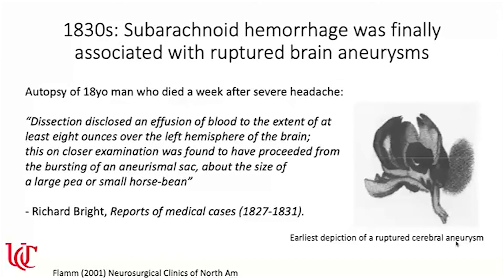It wasn't until the 1830s that subarachnoid hemorrhage was finally associated with ruptured brain aneurysms. Richard Bright, a British physician, performed an autopsy of an 18-year-old man who died a week after a severe headache. He described that his dissection disclosed an effusion of blood of at least eight ounces over the left hemisphere of the brain, found to have proceeded from the bursting of an aneurysmal sac about the size of a large pea or small horse bean — like a fava bean. This was the earliest depiction of a ruptured cerebral aneurysm.